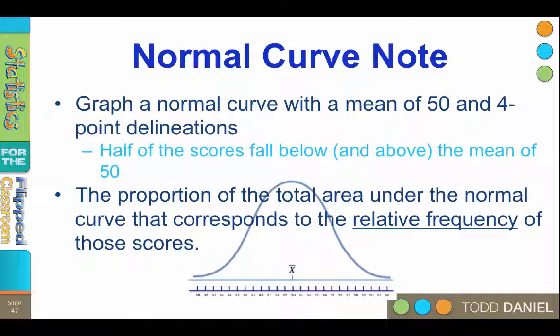The proportion is the total area under the normal curve that corresponds to the relative frequency of those scores. To better understand this, let's return to our picture of the people standing on the football field.